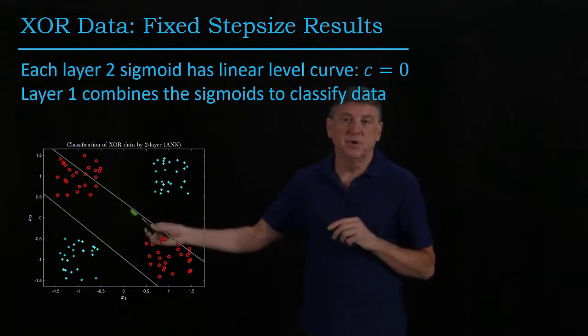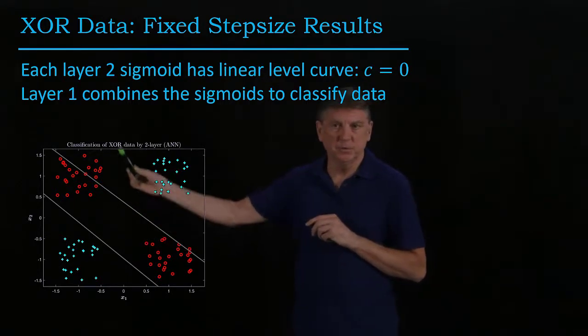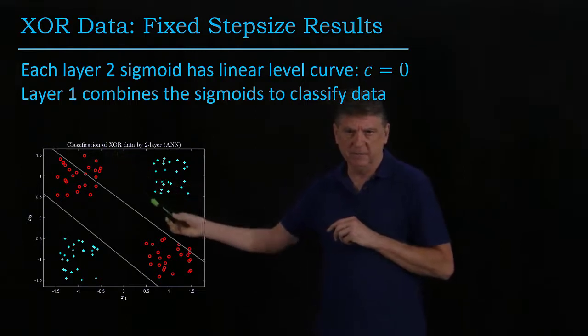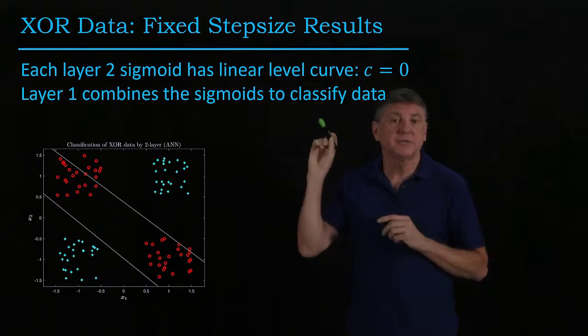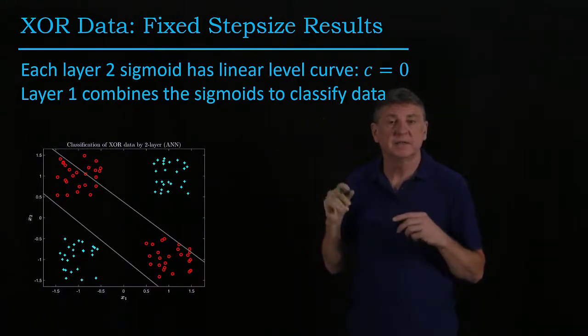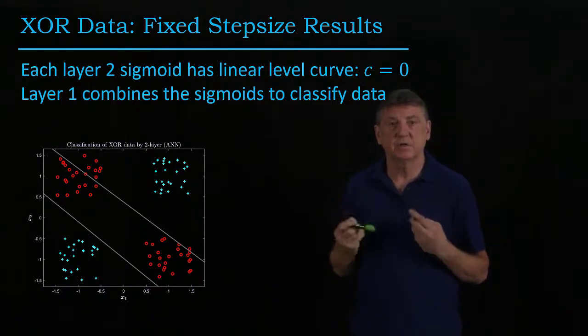It happens to have not done it the way that a human would do. A human might have drawn a line, for example, through here, but it's not using lines, it's using sigmoids, because that hidden layer has a nonlinear activation.